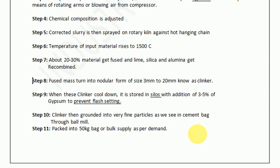In step 11, the fine cement is packed into bags — the usual commercial bag is 50 kg — and it is then supplied to the construction site. This is the basic way in which cement is produced through the wet process. Once you are very clear with each step, you will never need to revise this concept, and a thorough understanding of these steps will open up answers for many questions in the coming modules.